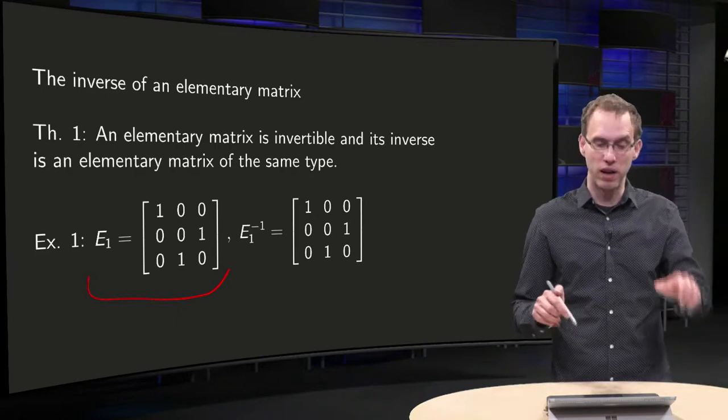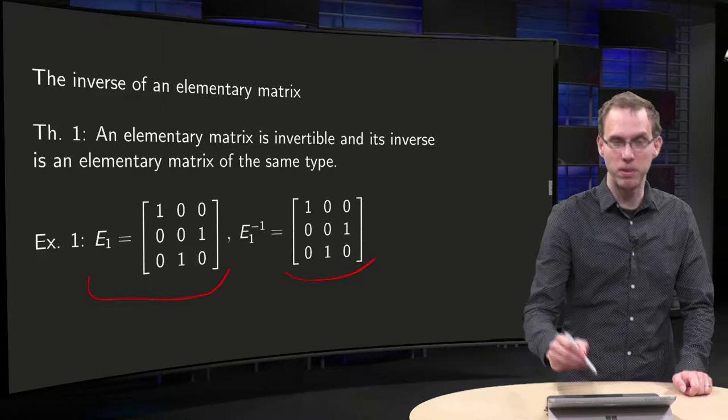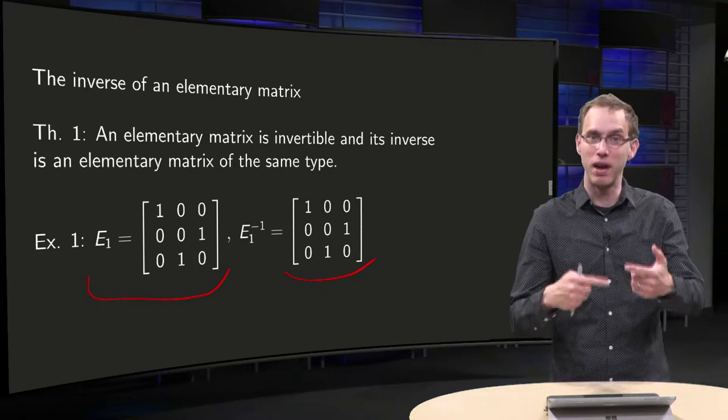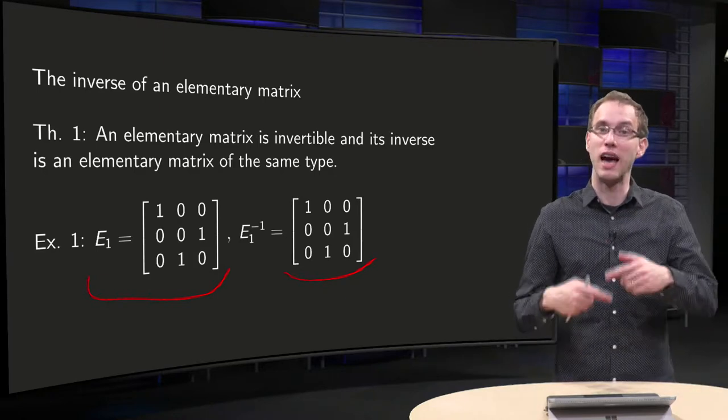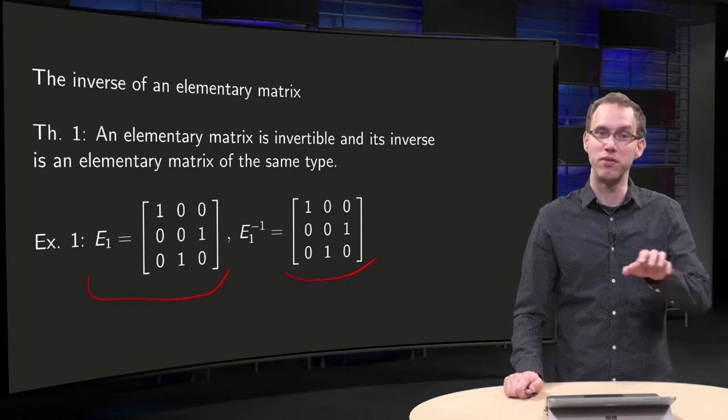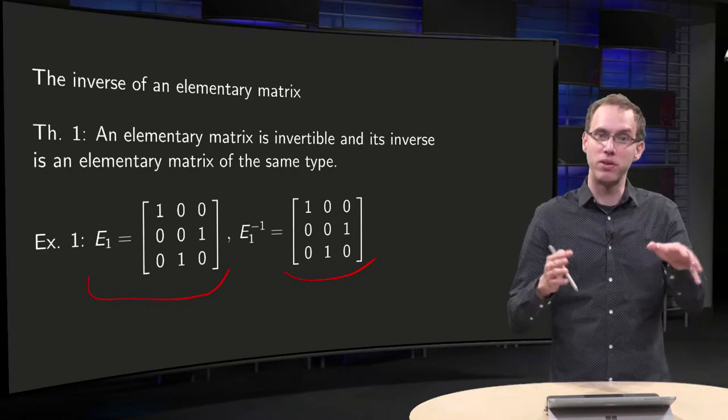By multiplying with the same elementary matrix on the left, because this E1 inverse does exactly the same operation, so if you multiply with this on the left, it interchanges back the rows of A.